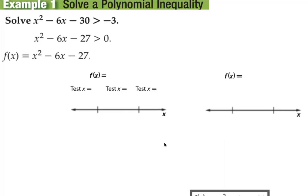Let's start by looking at an example. We have the inequality x squared minus 6x minus 30 is greater than negative 3. The very first step you always want to do is get your inequality on one side of the inequality sign so that you have a zero on the other side. In this case, we would be adding 3 to both sides. Then we're going to treat that just like a regular polynomial equation and find the zeros.